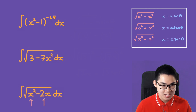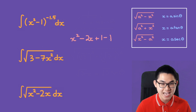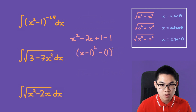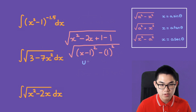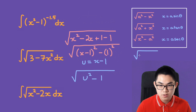You might also see x² + 2x in the expression. Complete the square: x² − 2x + 1 − 1 = (x−1)² − 1². Then substitute u = x − 1 to get √(u² − 1²), and apply the third form with u = a·secθ instead of x.